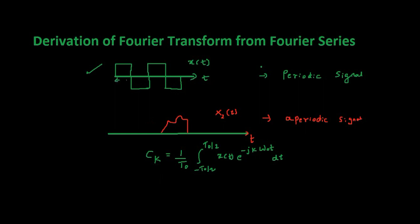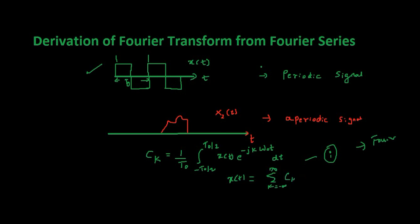Where T0 is the one single time period of a signal after which the signal repeats itself. So the signal repeats itself after time T0. The Fourier series coefficient Ck will be (1/T0) * integral from minus T0/2 to T0/2 - that is over a period T0 - of x(t) * e raised to minus jk*omega0*t dt. And x(t) can be written as summation from k = minus infinity to infinity of Ck * e raised to jk*omega0*t. These two equations are what we call Fourier series.